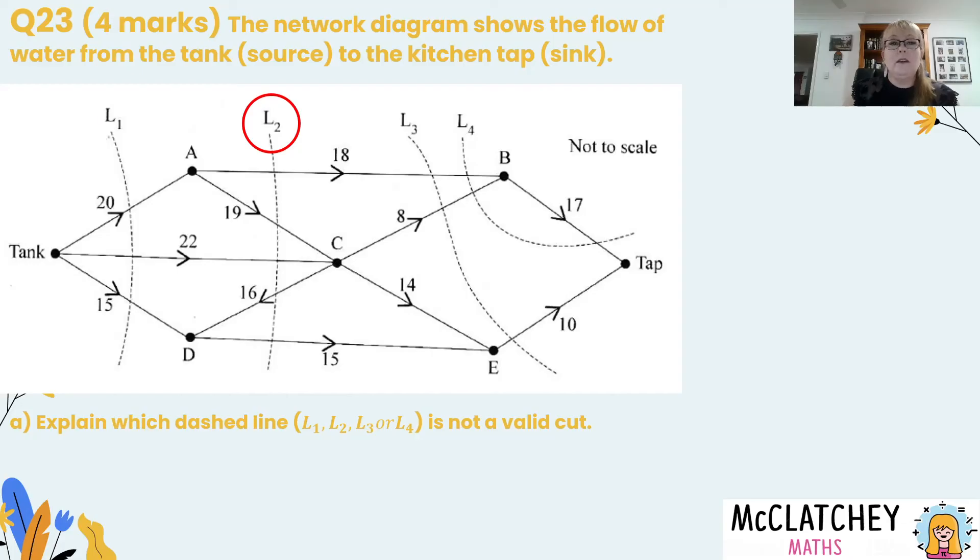It is also a valid cut, flow is cut through the network. It's just cut later on. L3 is also a valid cut. It cuts through all of the lines in the network. Nothing can pass through at that point. So that leaves us with L4.